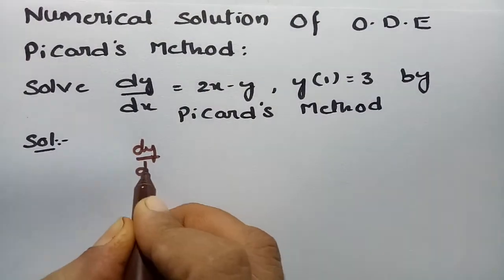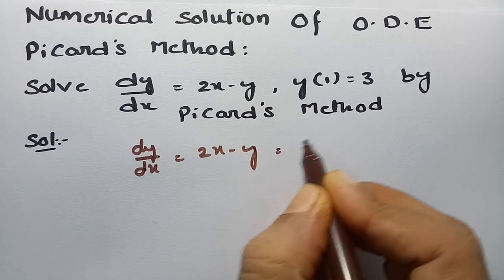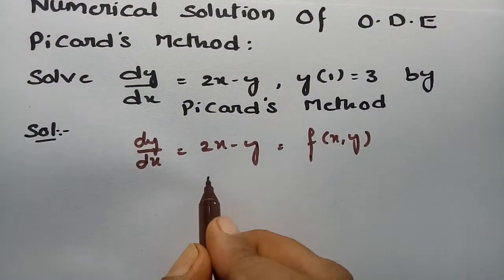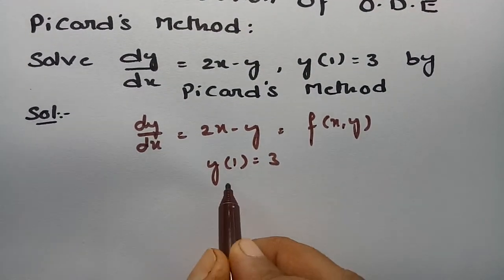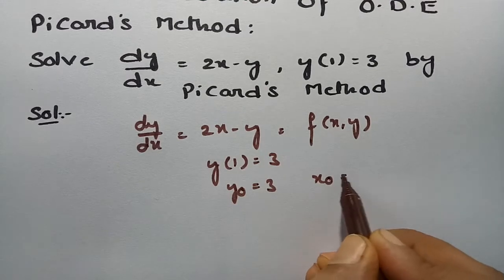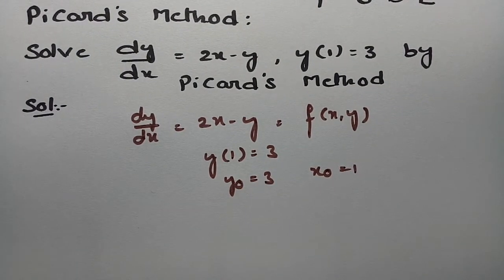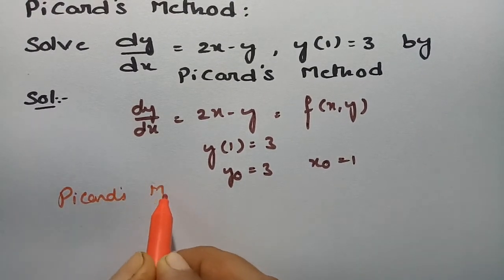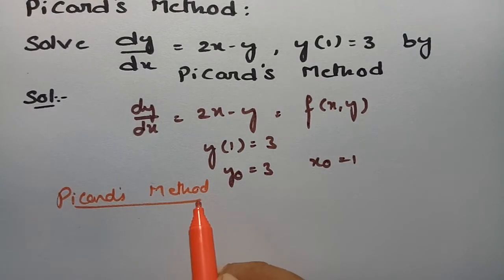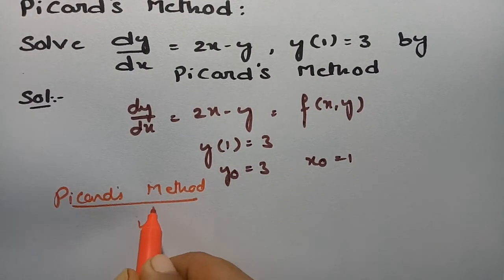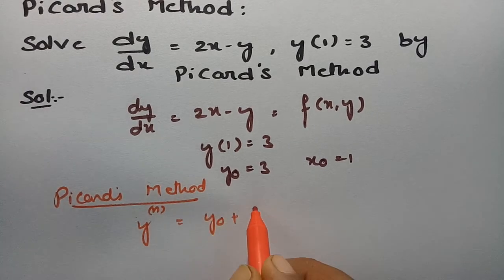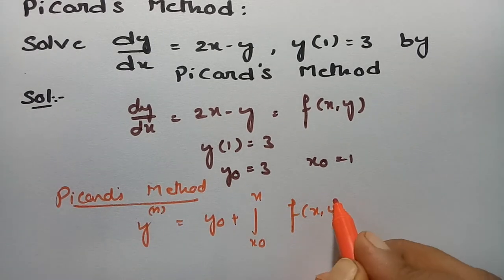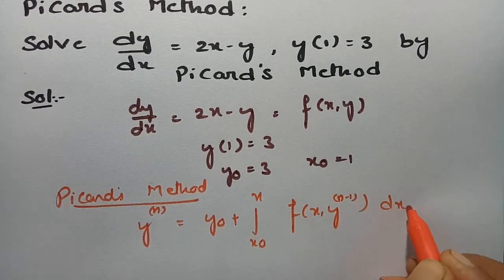So dy/dx is given as 2x - y, so we have to assume this as the function f(x, y). Also given that y(1) = 3, which means y₀ = 3 and x₀ = 1. According to Picard's method, the formula is: the nth iteration of y equals y₀ plus the integral from x₀ to x of f(x, y) at the (n-1)th iteration dx.